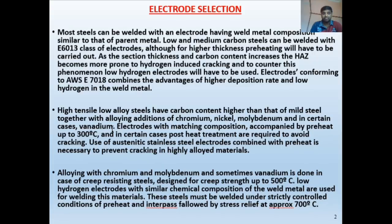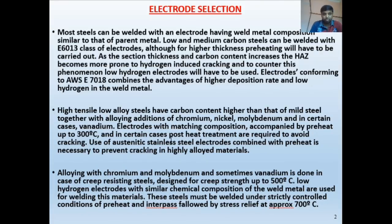High tensile low alloy steel has a carbon content higher than mild steel, with alloying additions of chromium, nickel, molybdenum, and vanadium. For such steels, use an electrode with matching composition, accompanied by preheat up to 300°C to remove hydrogen. Hydrogen-induced cracking is a concern, and in certain cases post-weld heat treatment (PWHT) is also required to avoid cracking.